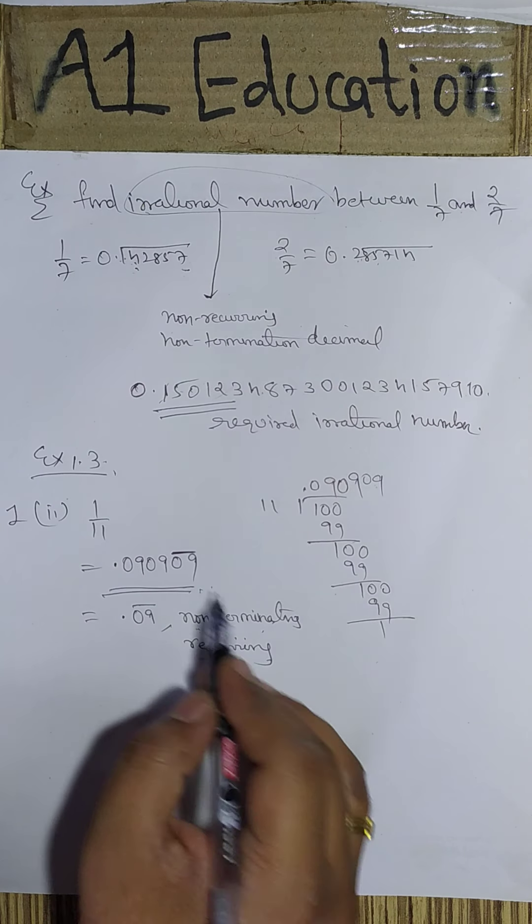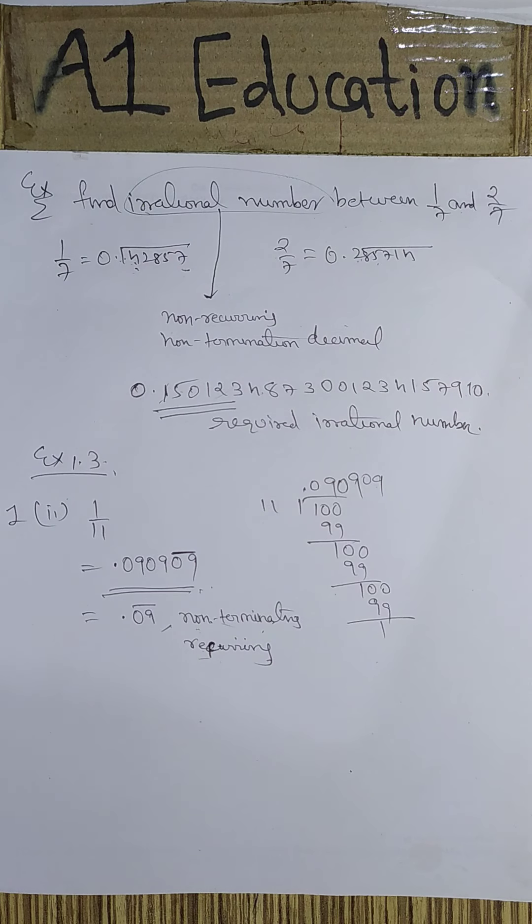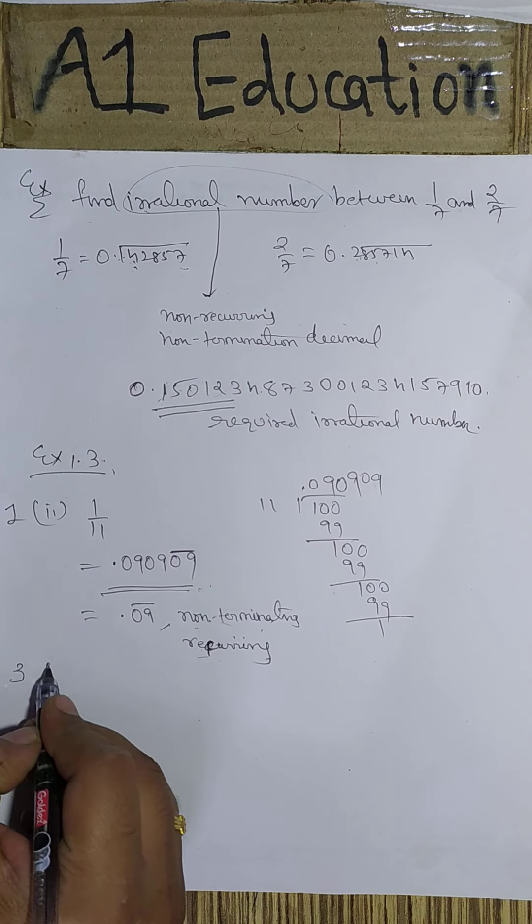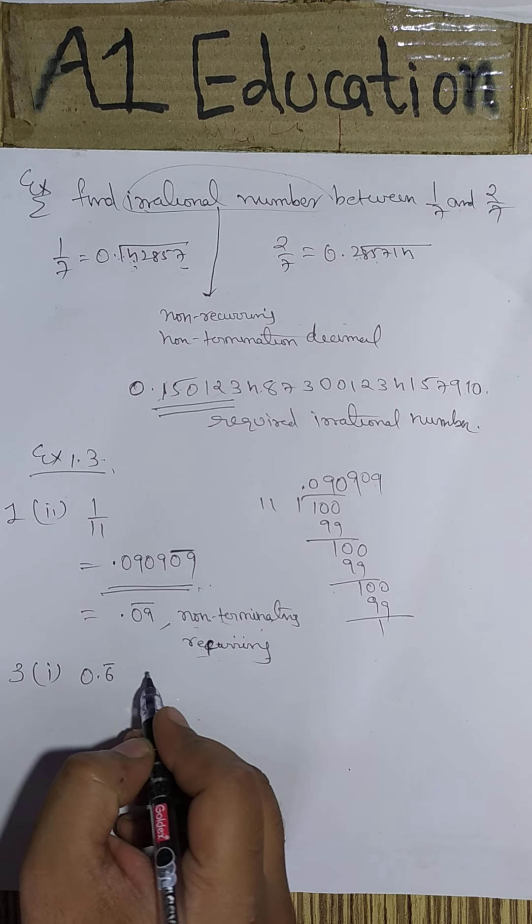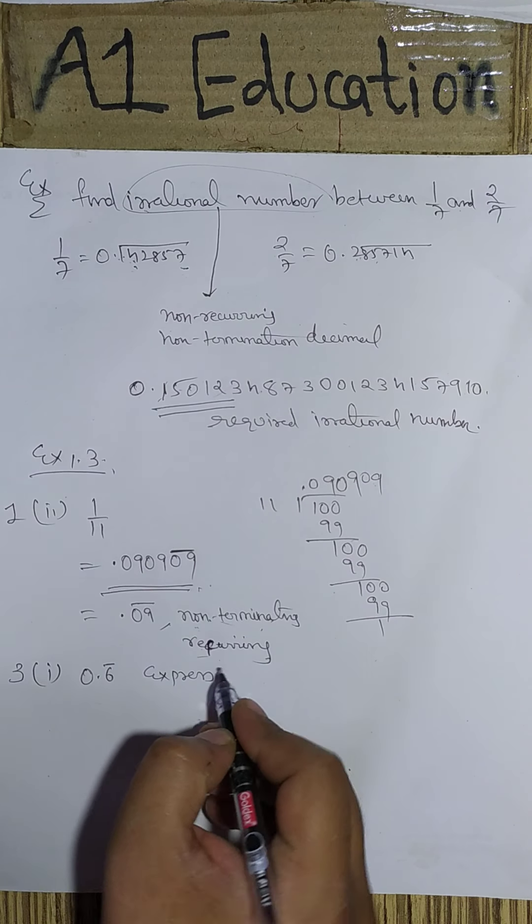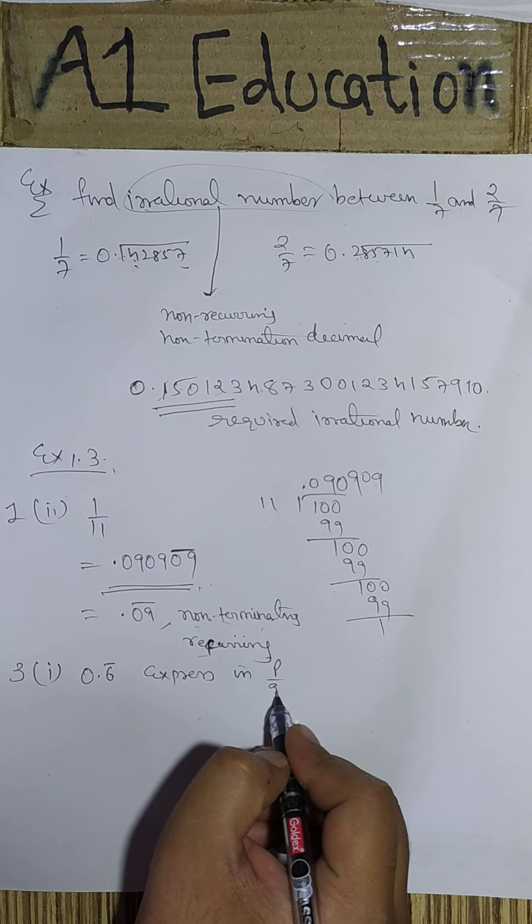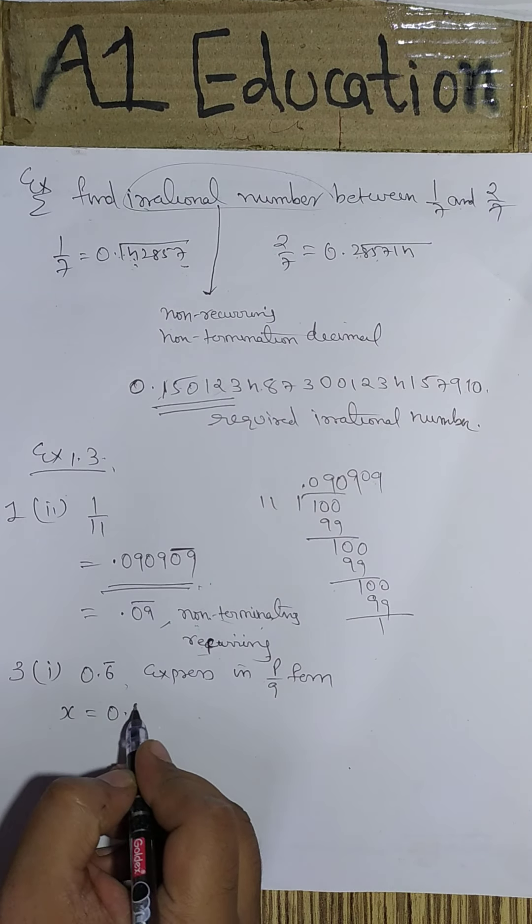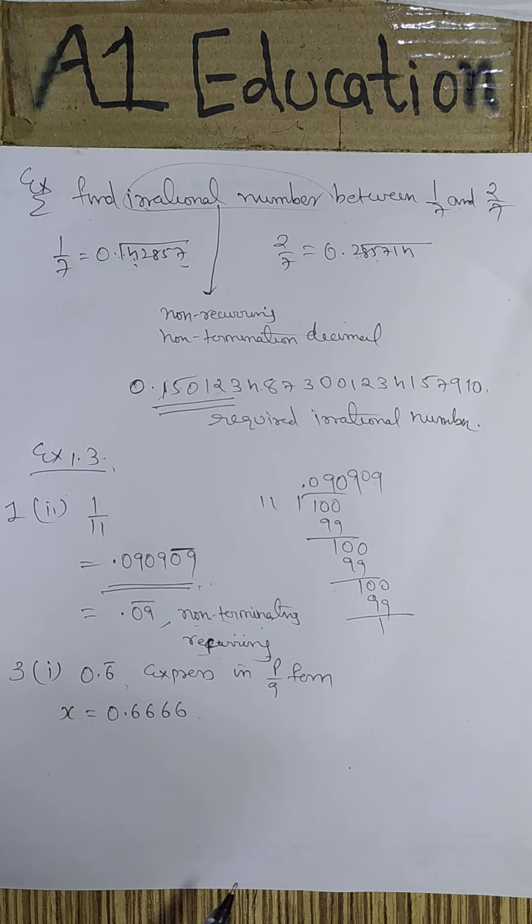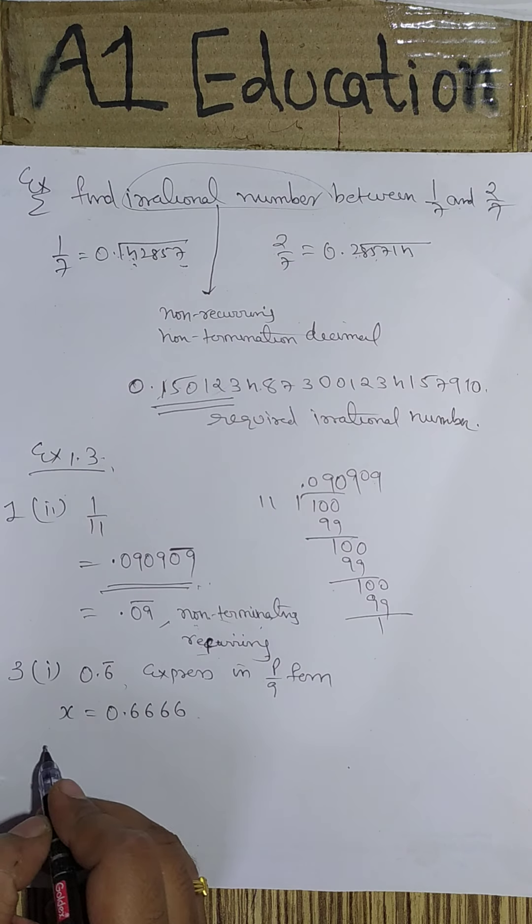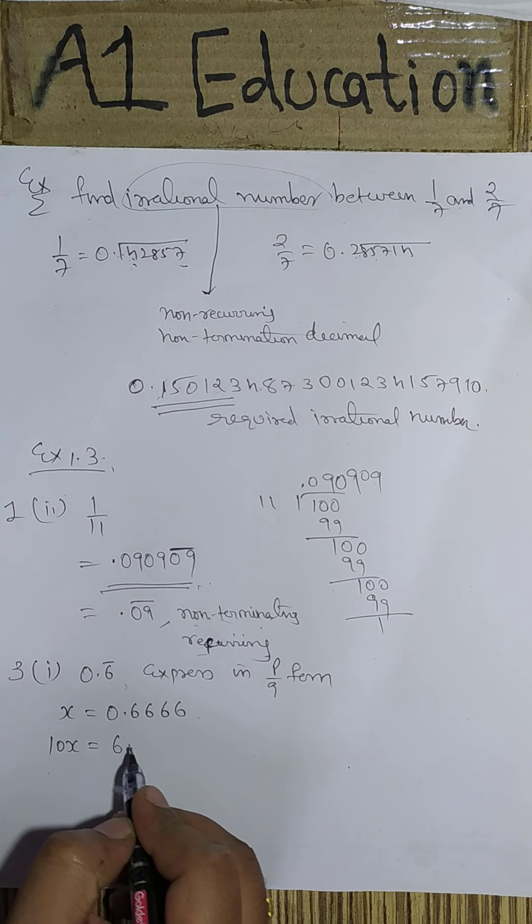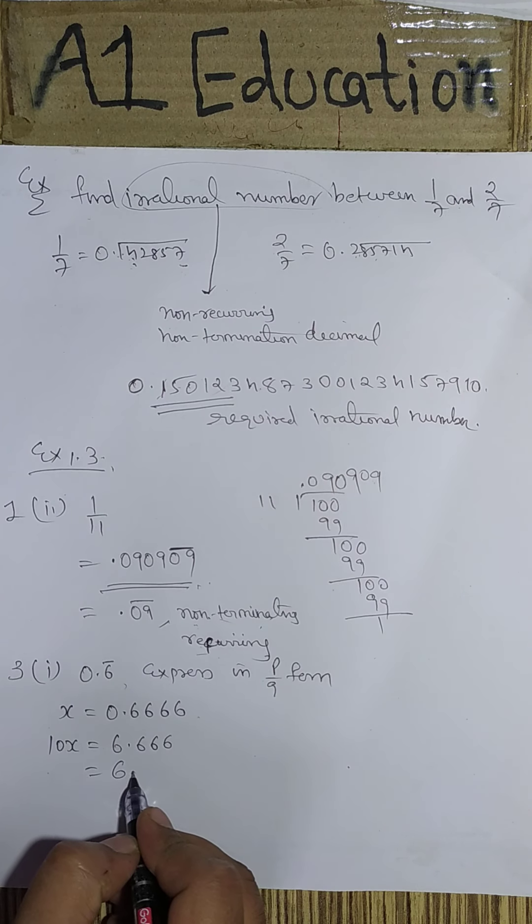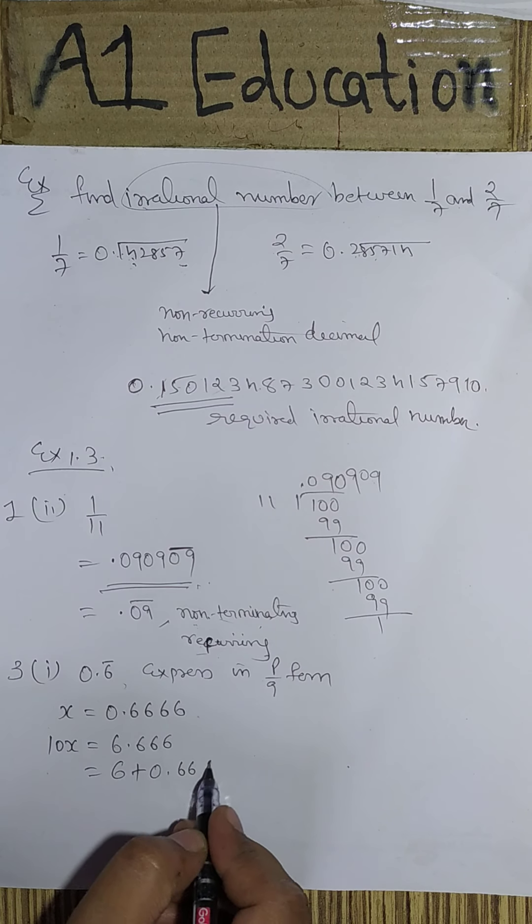Next question I take is to express 0.6 bar in p/q form. So let us say x equals 0.6666. Since one number is repeated, I multiply by 10. It becomes 6.6666, which can be written as 6 plus 0.6666.